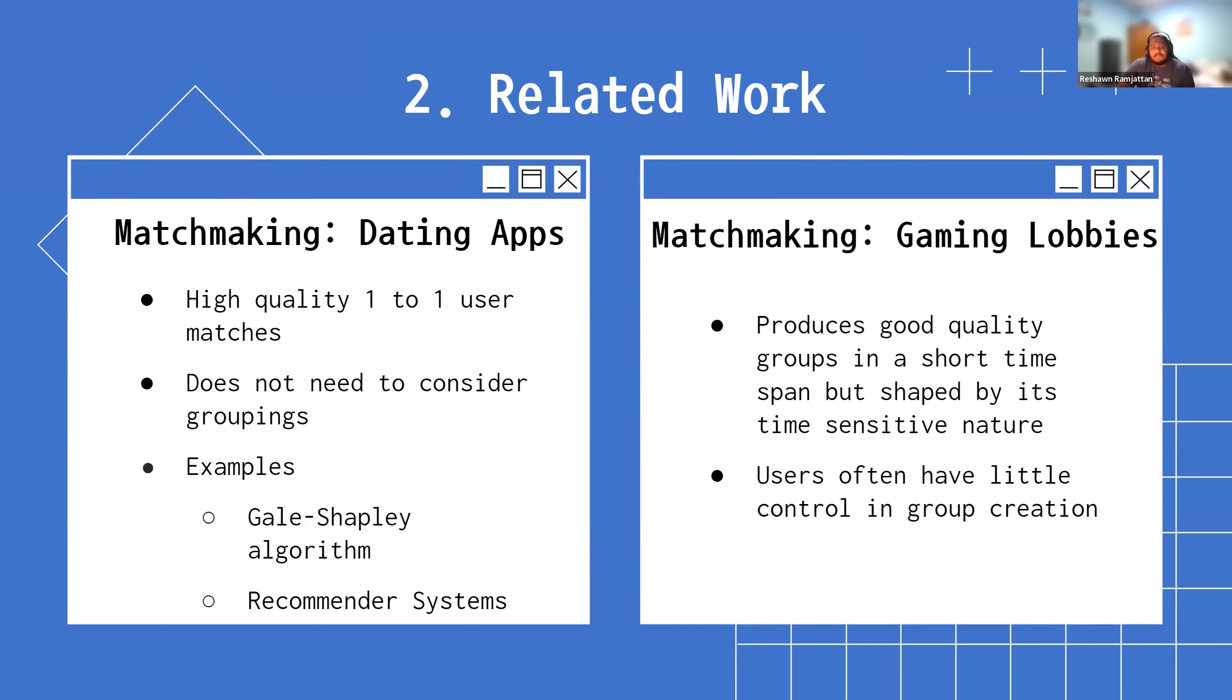On the other side, we have gaming lobbies where we do consider both the quality of the matches and the grouping side of it, but their solutions are shaped by their own intentions. They need to form the best groups very quickly to get people playing as fast as possible to get the best experience for the players as fast as possible. Because of that, the users themselves often have very little control and the groups that they create are usually just random according to who wants to play at the time.